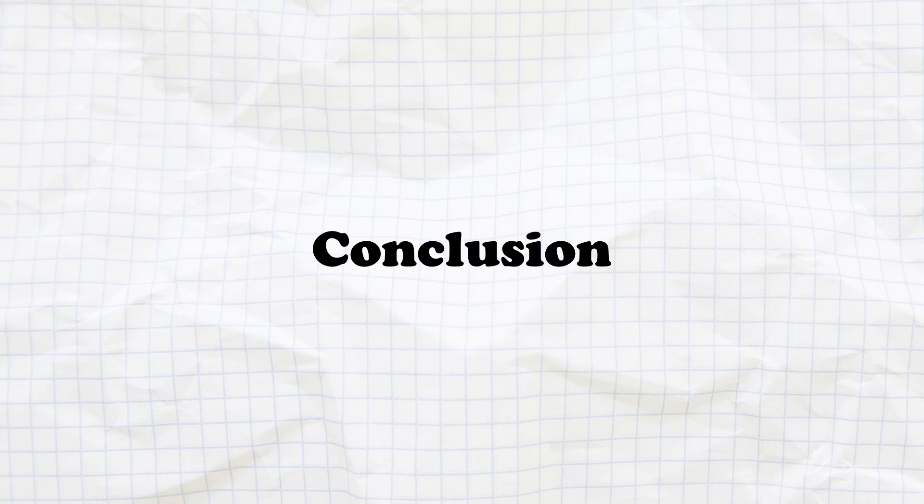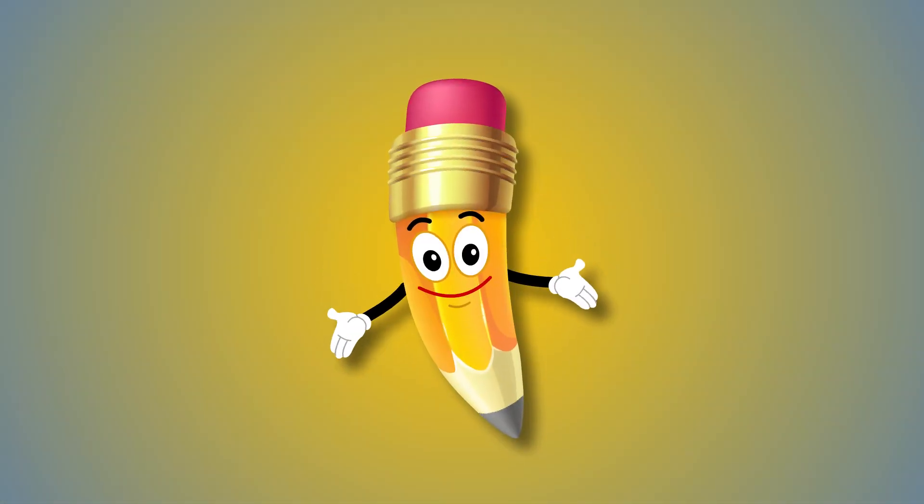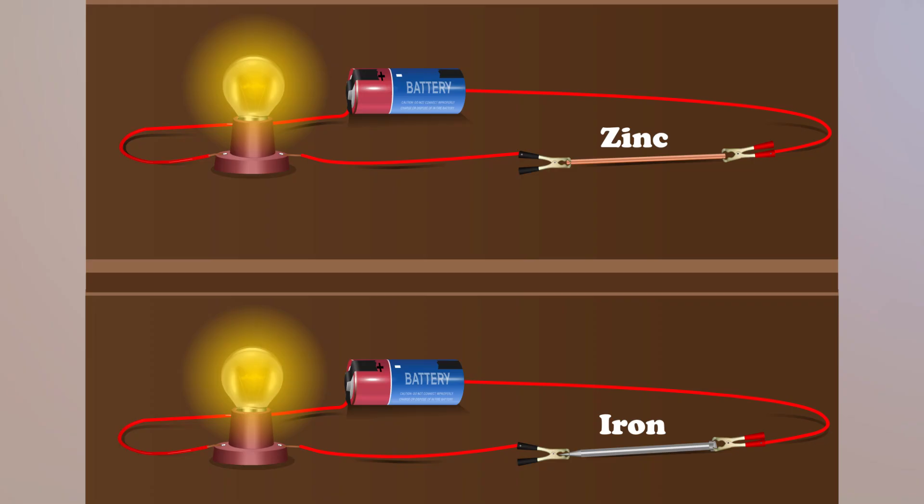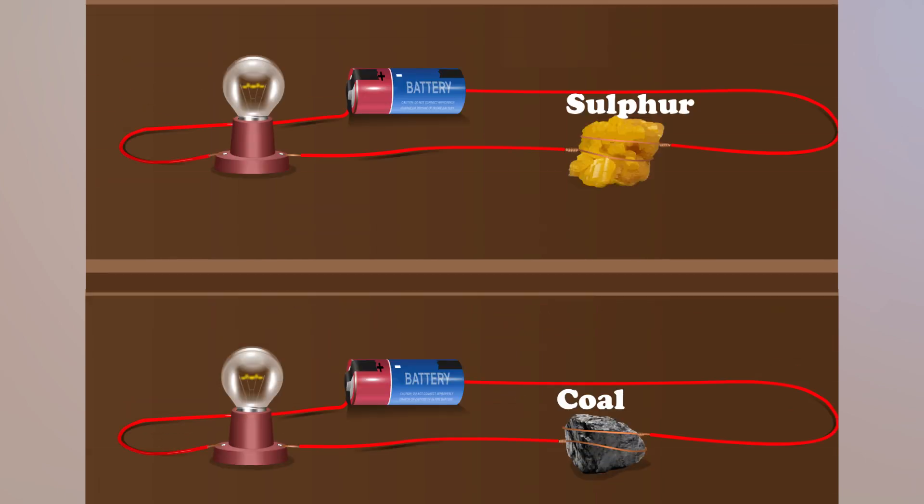Conclusion. And that's a wrap, conductivity detectives. So what did we learn? Metals like iron and zinc are superstar conductors. They light up the bulb like magic. Meanwhile, our non-metals, sulphur and coal, just don't make the bulb glow. No glow, no show.